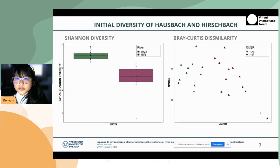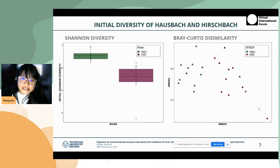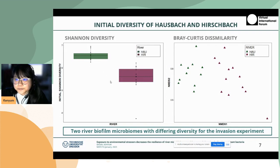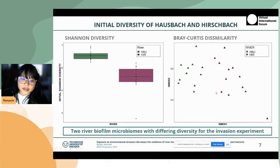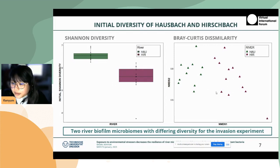When we looked into the initial diversity of Hausdorferbach and Hirschbach, the alpha Shannon diversity of both rivers showed that they are different. The beta diversity — the Bray-Curtis similarity shown on the right side — also showed that they are distinctly different. Hence, we concluded that we have two river biofilms with different diversity for the experiment.